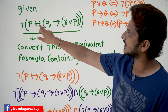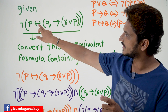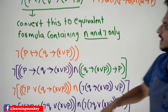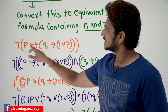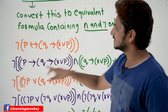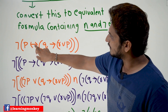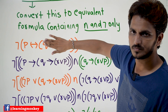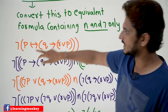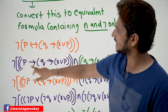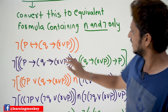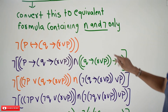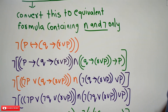The first step is to convert the biconditional into a conditional formula. The negation is applied to the entire expression. P double implies Q (where Q represents the entire inner expression) can be written as (p implies Q) conjunction (Q implies p). Watch the brackets carefully — that is very important.